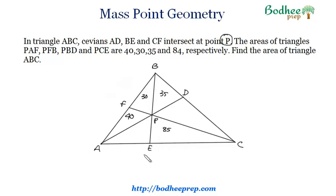So ABC is a triangle, D, E, F are the cevians, and 40, 30, 35, and 84, these numbers are the respective areas of those triangles. Now we need to find the area of the larger triangle, that is ABC.